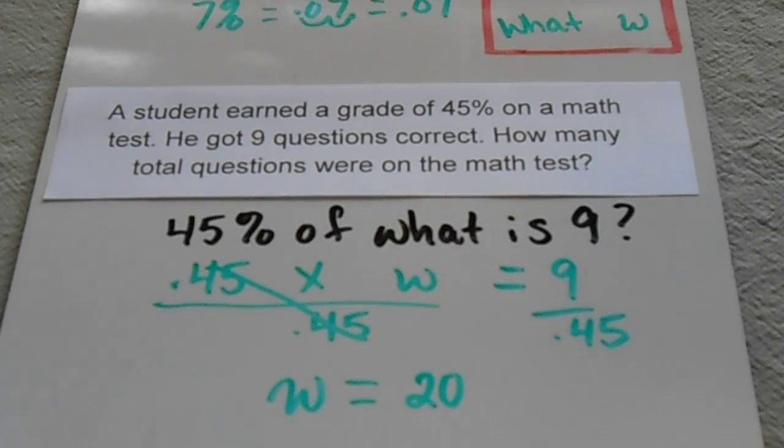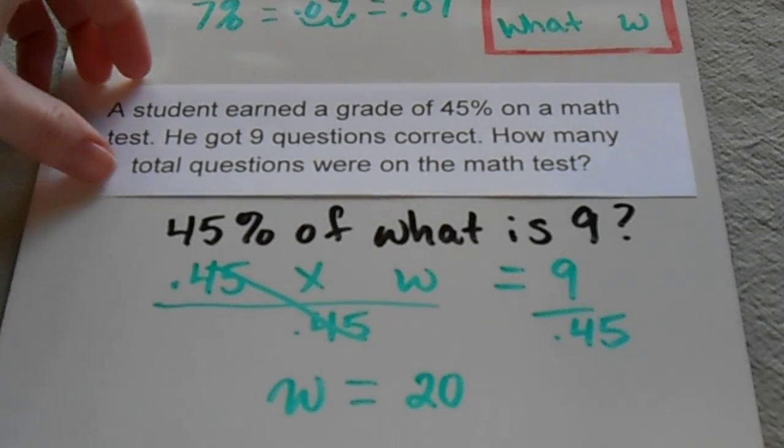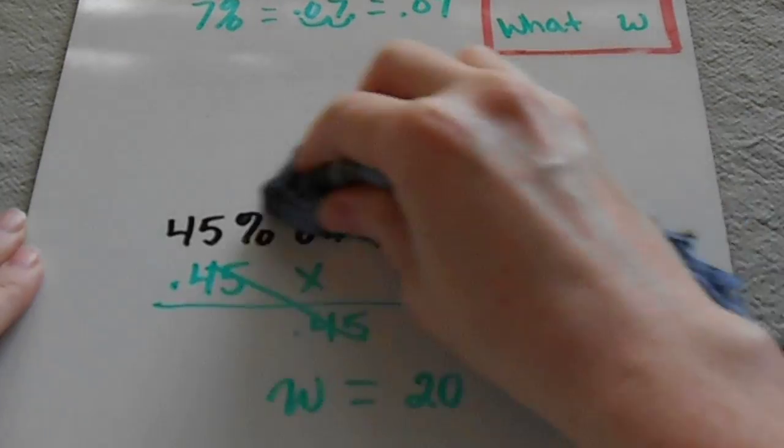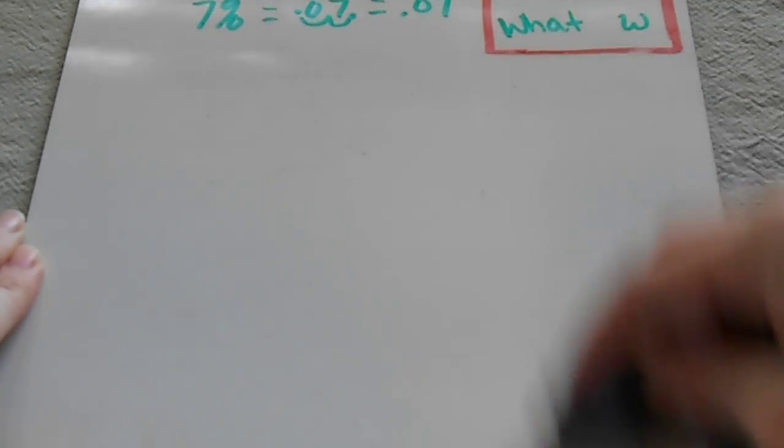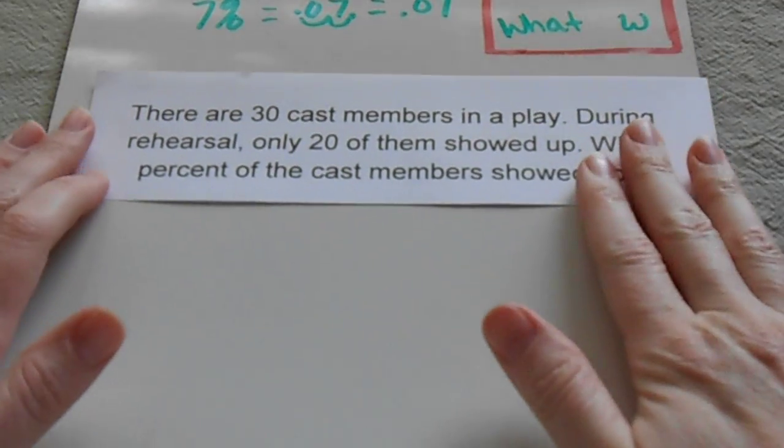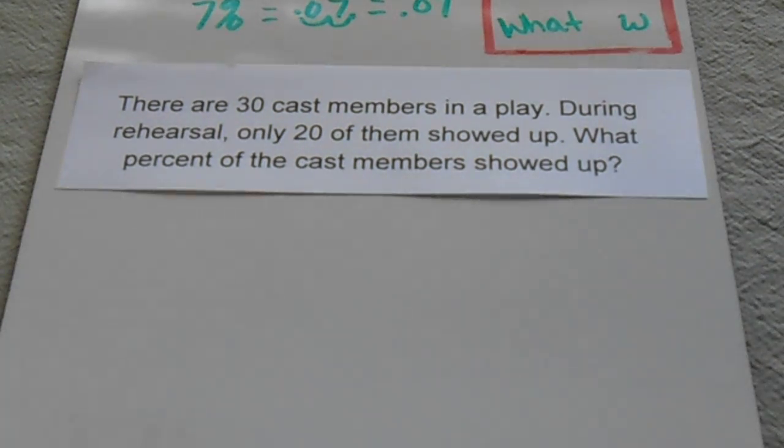Okay, and then there is one other way that these are typically seen in word problems. I'll give you the last one. So if our question reads: there are 30 cast members in a play. During rehearsal, only 20 of them showed up. What percent of the cast members showed up?